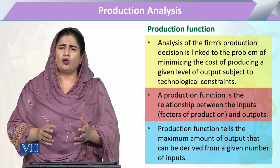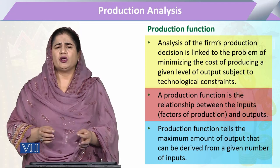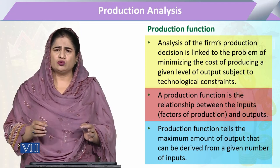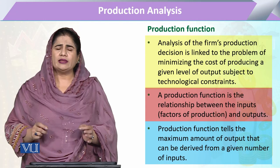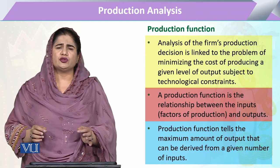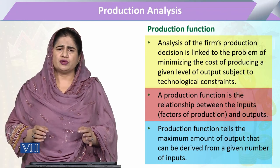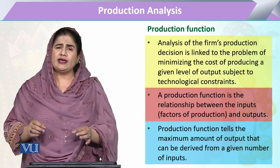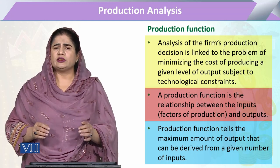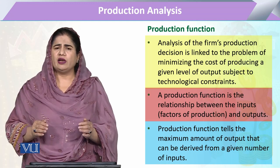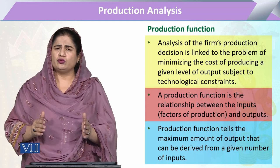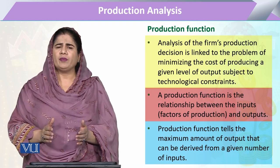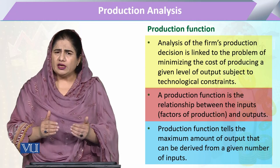When resources are limited, the entrepreneur — the producer, the owner — has the biggest desire to select the least cost combination of resources, or the least cost method or technology, to produce a given level of output. So production function is about achieving the least cost combination.